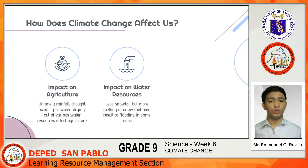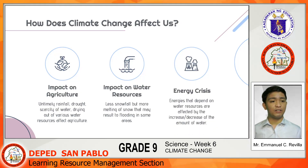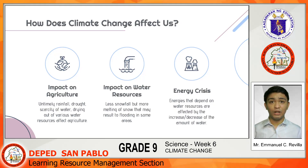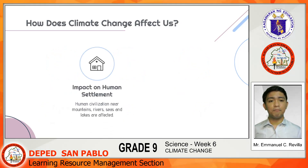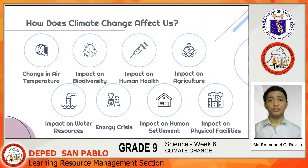Impact on water resources — this results in less snowfall in some areas but more melting of snow and glaciers, which in turn results in flooding in several areas. Energy crisis — rivers and other sources of water are used for hydropower generation, so increase or decrease in the amount of water affects power generation, at times resulting in an energy crisis. Impact on human settlement — human civilization near mountains, rivers, and seas and lakes are affected, and we know this very well since we live in an archipelago surrounded by bodies of water. Lastly, impact on physical facilities — climate change affects developmental activities like construction of roads, bridges, and other structures, causing unexpected rainfall, resulting in flooding and landslides.